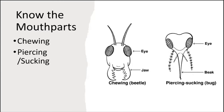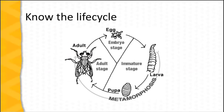Knowing the life cycle of an insect is also important because some stages make that insect easier to control. Also, some stages might cause damage where a different stage might not. For example, a caterpillar usually causes damage from chewing, where the adult — such as a butterfly or moth — might not cause any damage and might actually be beneficial as a pollinator.